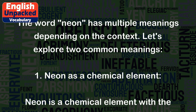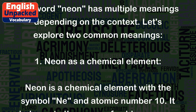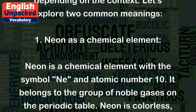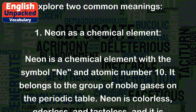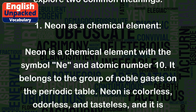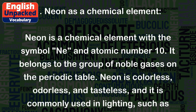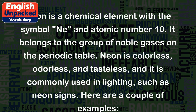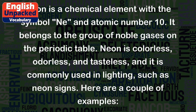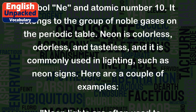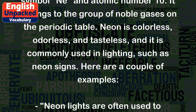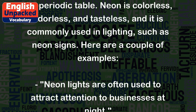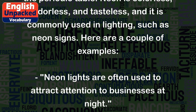Neon is a chemical element with the symbol NE and atomic number 10. It belongs to the group of noble gases on the periodic table. Neon is colorless, odorless, and tasteless, and it is commonly used in lighting, such as neon signs.